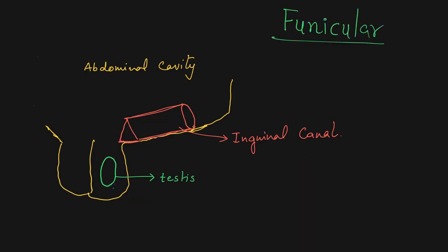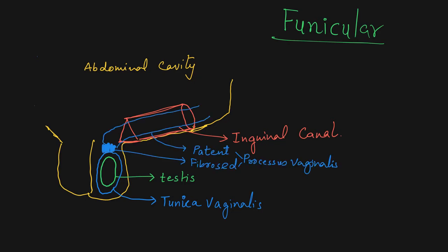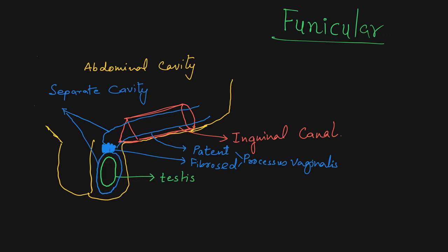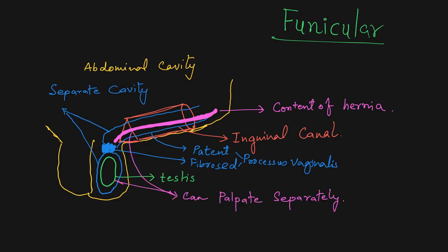If the tunica vaginalis is a separate cavity and the processus vaginalis becomes fibrous just above the level of the testes, then the patent processus vaginalis and tunica vaginalis are separate cavities. So the doctor can palpate the testes and the content of the hernia passing through the processus vaginalis separately — that is known as the funicular type of hernia.